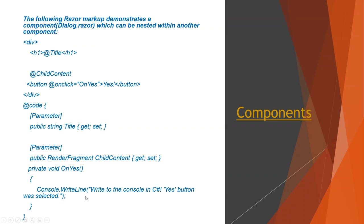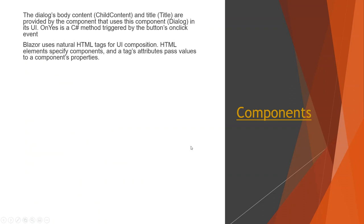Since this is not a console application, the Console.WriteLine statement won't actually execute. I've given my own rendering instead, which I'll show in a bit. The dialog's body — ChildContent and Title — are provided by the component that uses this dialog component. OnYes is a C# method triggered by the button's onclick event.